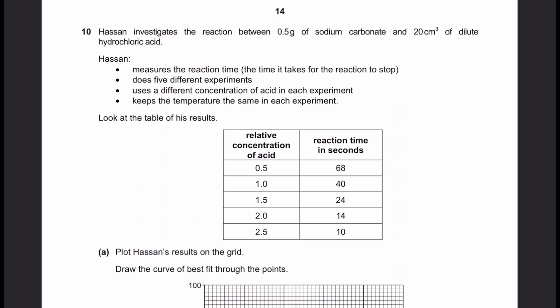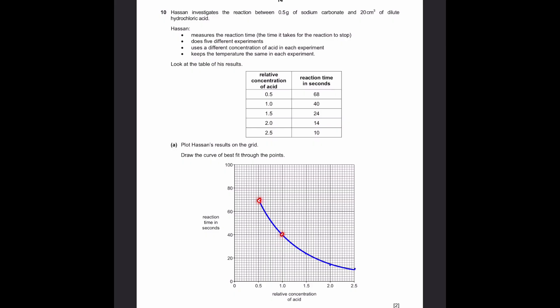Let's go to question 10. Hassan investigates the reaction between 0.5 grams of sodium carbonate and 20 centimeters cubed of dilute hydrochloric acid. Hassan measures the reaction time it takes for the reaction to stop, does five different experiments, gives a different concentration of acid in each experiment, keeps the temperature the same in each experiment. Look at the table of his results. The table is given here: relative concentration of acid and reaction time. Part A: Plot Hassan's results on the grid, draw the curve of best fit through the points. So all the five points are here, 1, 2, 3, 4, 5. You need to plot it like that correctly, otherwise the answer is wrong. And then you have to draw the curve of best fit, just like this. Smooth curve, of course.